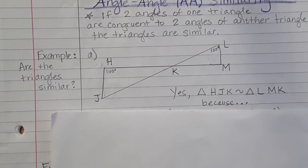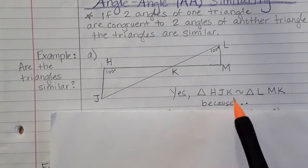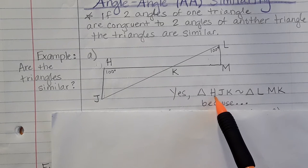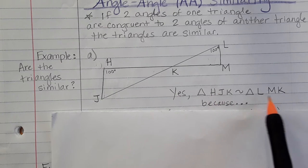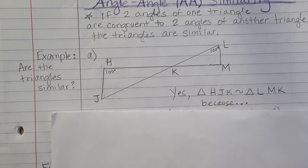So are they similar? Yes, they are similar. And here is the symbol for similar. And you must label this, remember, so that it matches. So H is the first letter, that's 100 degrees. L is the first letter, that's also 100 degrees. Remember, they have to be corresponding.